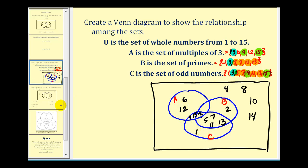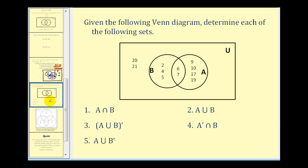Now let's look at our second example. We have a Venn diagram and want to determine each of the following sets. First, A intersected with B — this contains the elements that are in both set A and set B, which are six and seven.